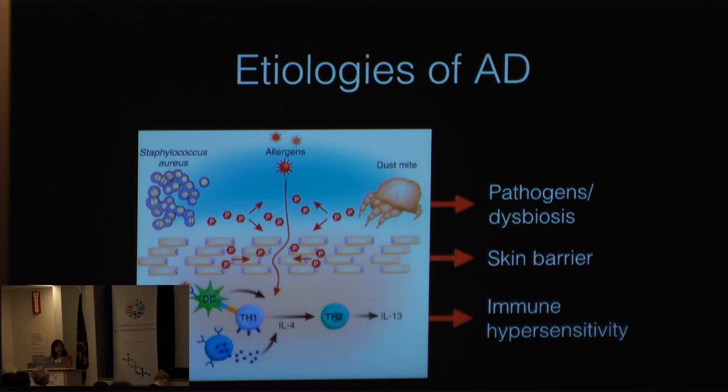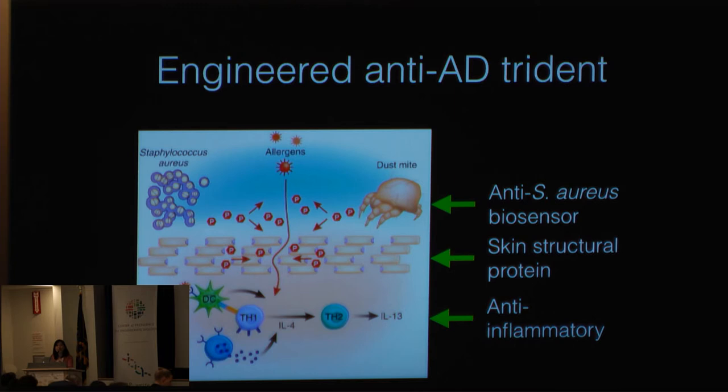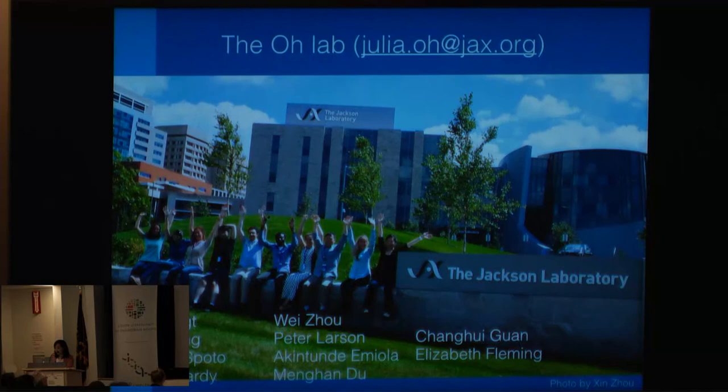The implication is that the genetic diversity encoded by all those different Staph epidermidis strains has given each some benefit in terms of survival in the skin community. We're trying to harness those beneficial characteristics to make a super Staph epi strain. For a disease like AD, we want to address our AD triad of the microbe, the skin defects, as well as the immune system. We're engineering our new Staph epidermidis to have a modular system so we can swap in and out different therapeutic parts — for example, an anti-Staph aureus biosensor to create different therapeutic proteins or anti-inflammatory molecules.